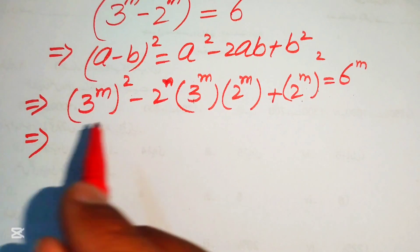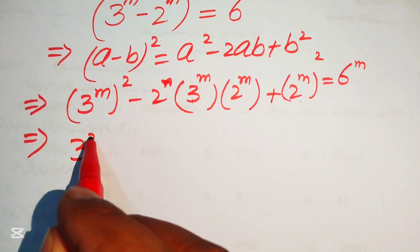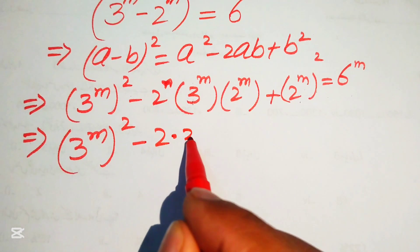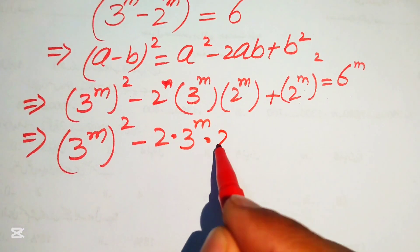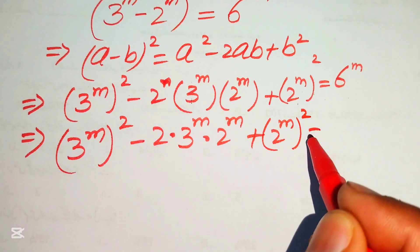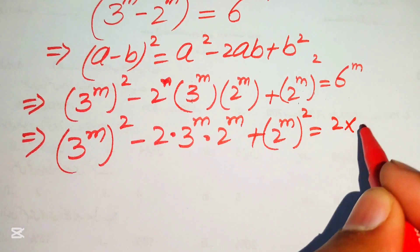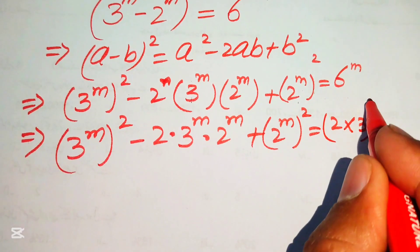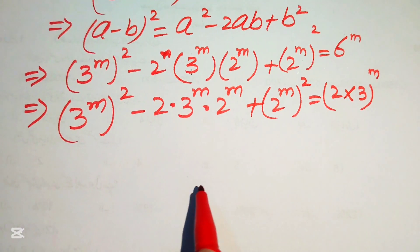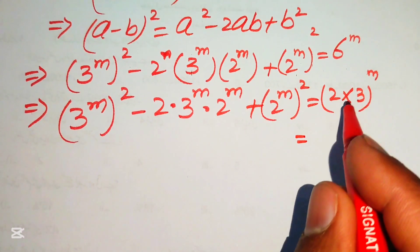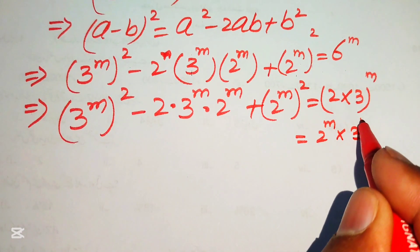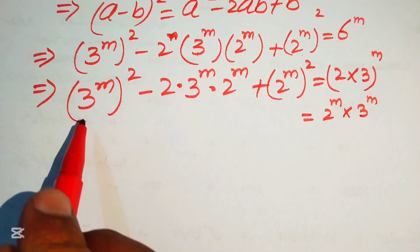Now we focus on the right-hand side. We rewrite: (3^m)² - 2·(3^m)(2^m) + (2^m)² = 6^m. We write 6 as 2 times 3, so 6^m = 2^m · 3^m.